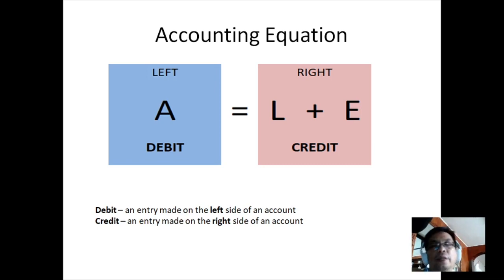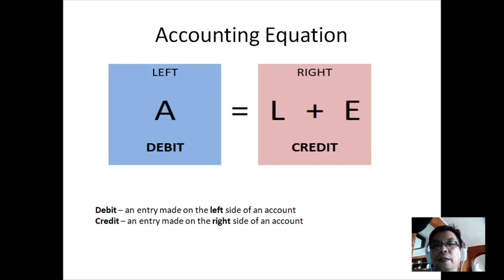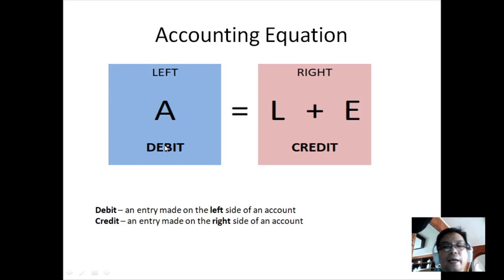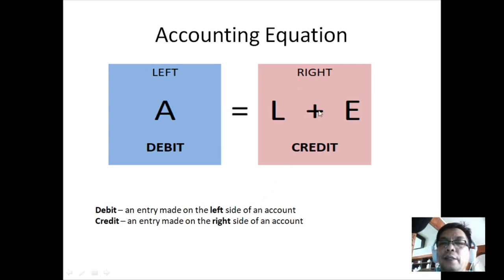Let's take a look at the accounting equation: Assets = Liabilities + Equity. On the left side of the equation is the asset, and the left side is what we call the debit side — an entry made on the left side of an account. On the right side we have liabilities and equity, and an entry made on the right side is called a credit.